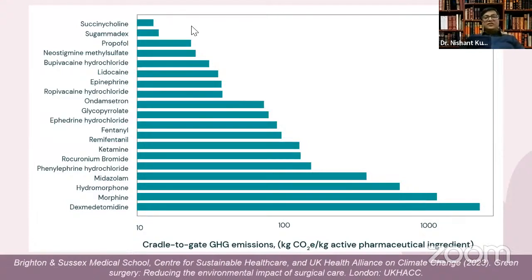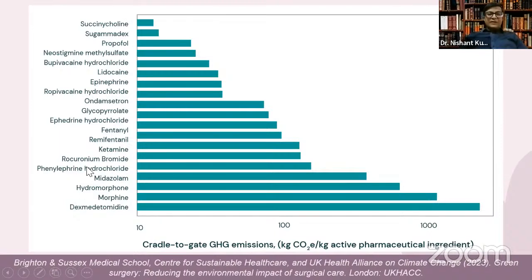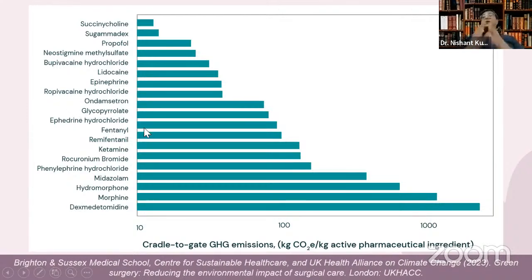It is not only inhalational agents that are problematic. Looking at cradle-to-gate greenhouse gas emissions from manufacturing to disposal, drugs like succinylcholine, sugammadex, propofol, midazolam, phenylephrine, rocuronium, ketamine, remifentanil, fentanyl, morphine, and dexmedetomidine all contribute — with dexmedetomidine having perhaps the highest greenhouse gas emissions among IV agents. Our aim should be to choose the anesthetic with maximum patient benefit and least environmental impact.